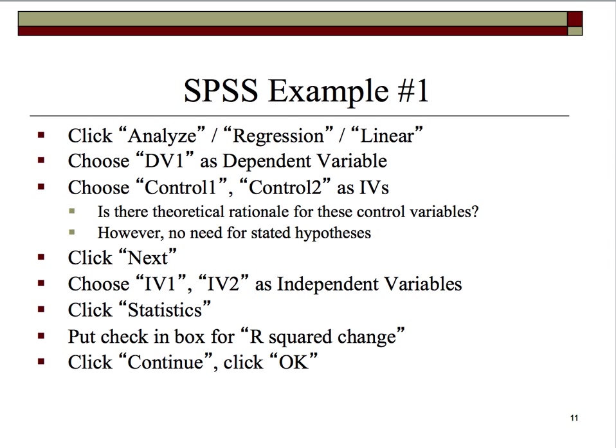Why is gender or age being used as a control variable? Hopefully it's because previous research has found those variables significantly related to whatever criterion we're examining. With control variables, there's never really a stated hypothesis about them — we focus our hypotheses on the focal relationships in our model. So we'd click Next, select our independent variables, click Statistics, and since this is hierarchical regression, we want the software to calculate the R-squared change.